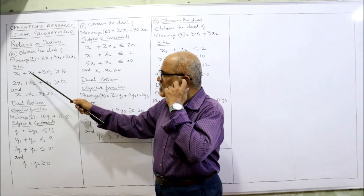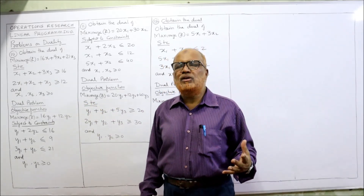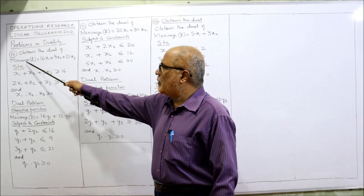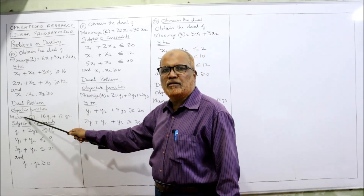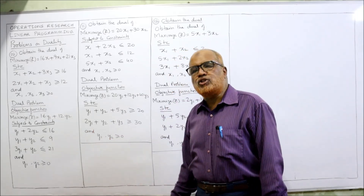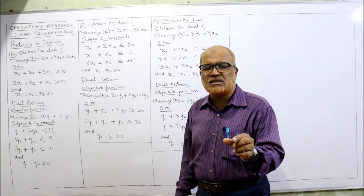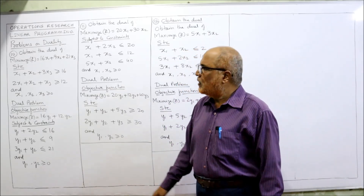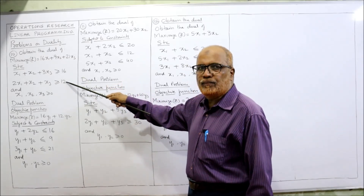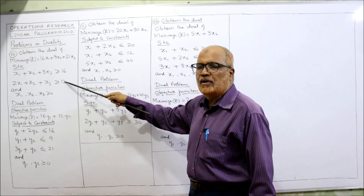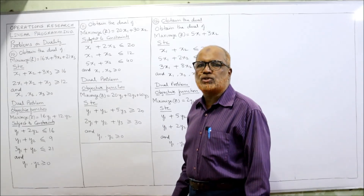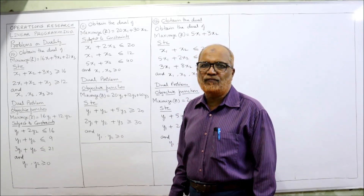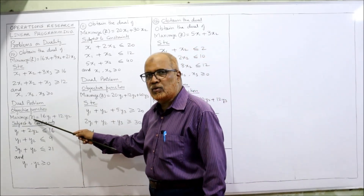There are two constraints and three variables: X1, X2, X3. In the dual, the objective function becomes opposite — here the primal is minimization, so it will become maximization. The restrictions of the constraints (16 and 12) will become the coefficients of the dual objective function.